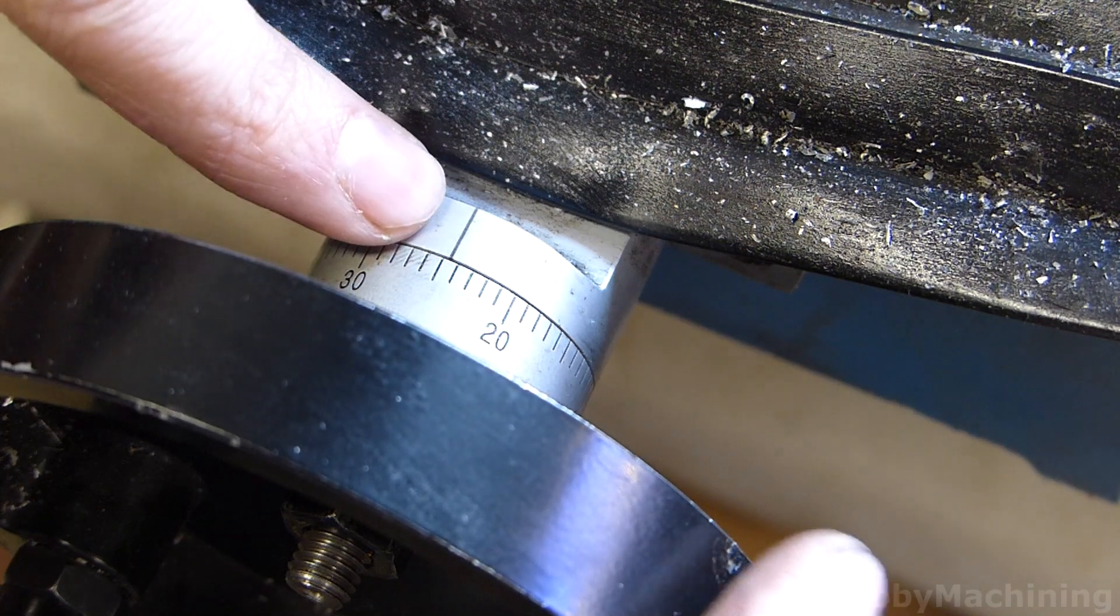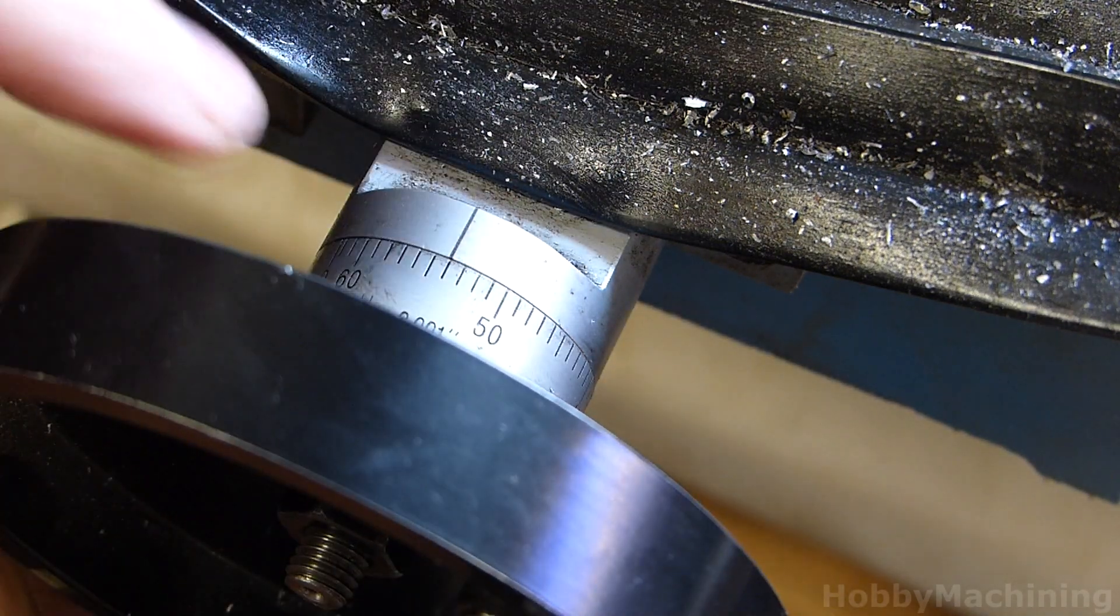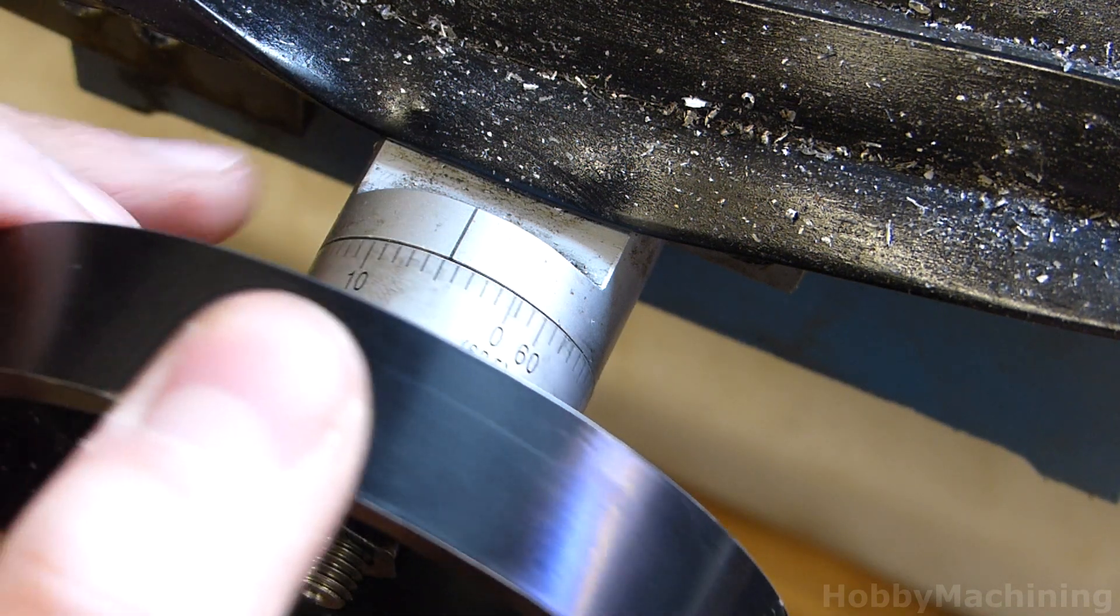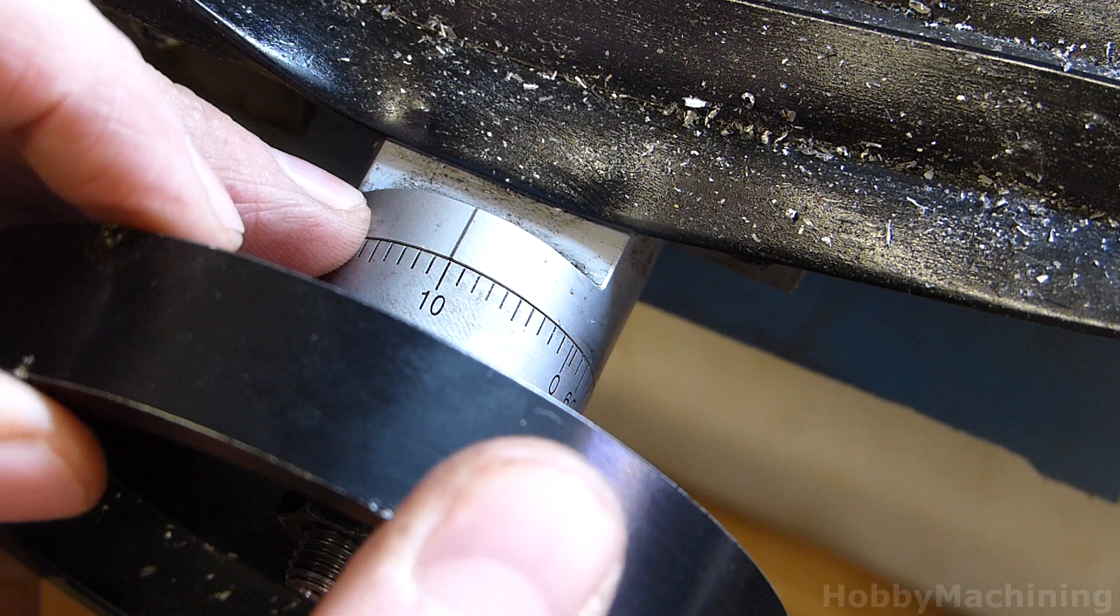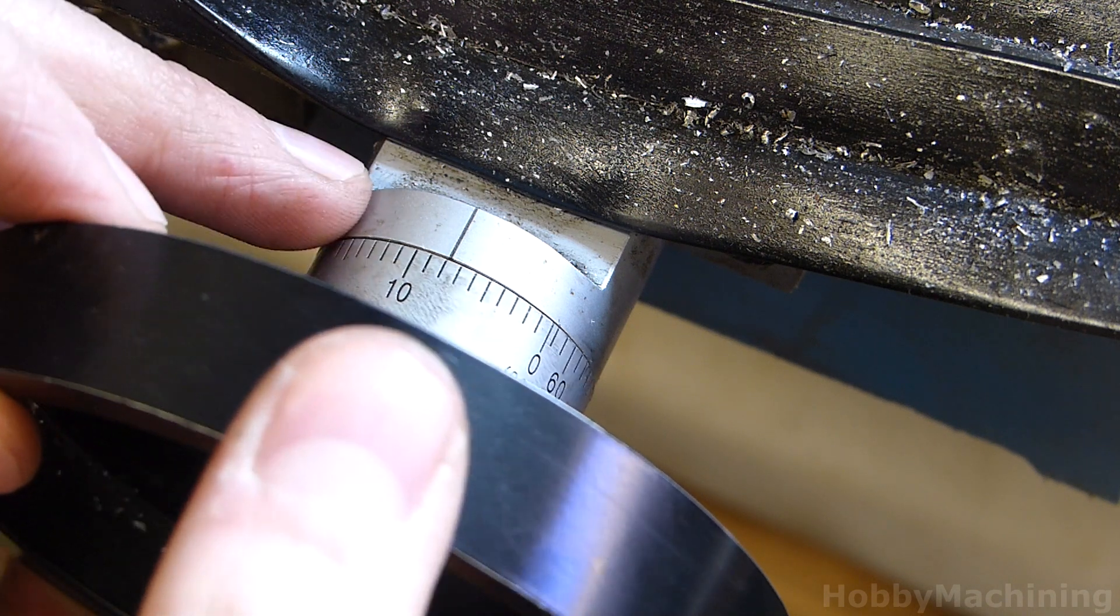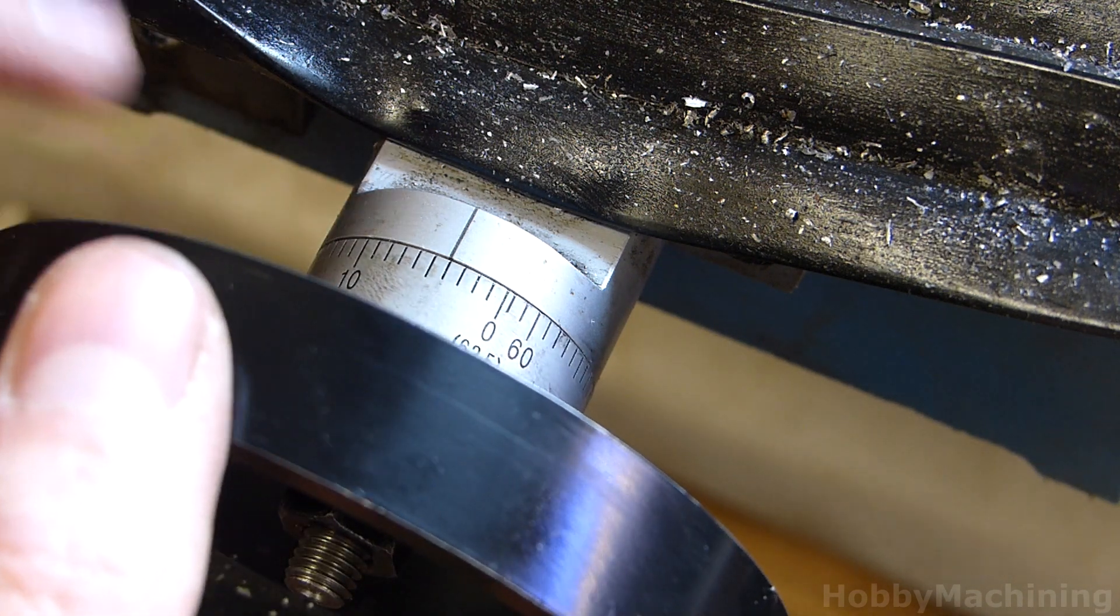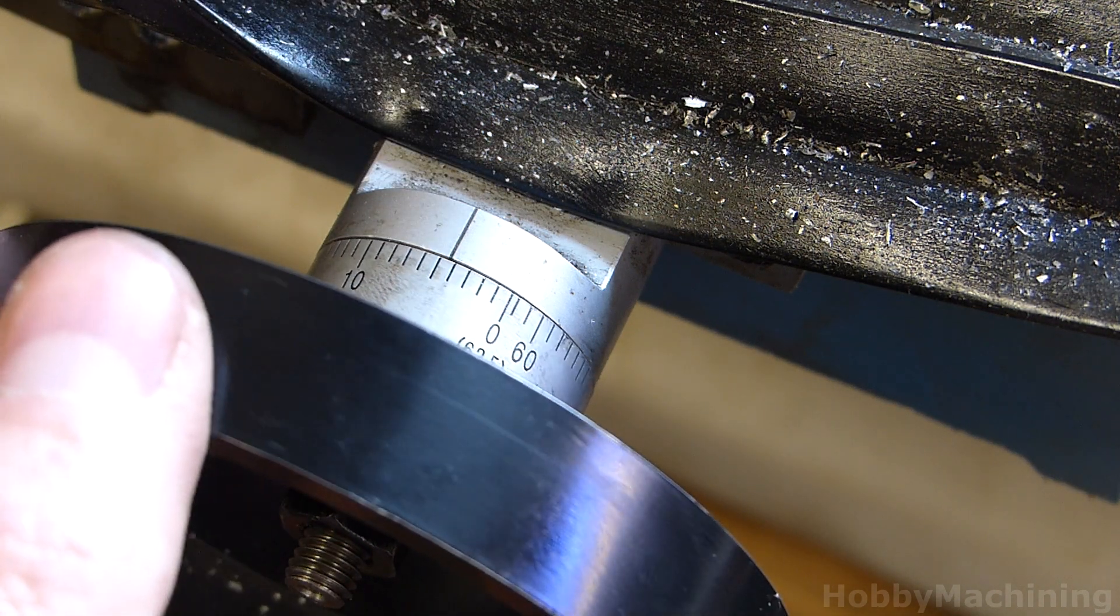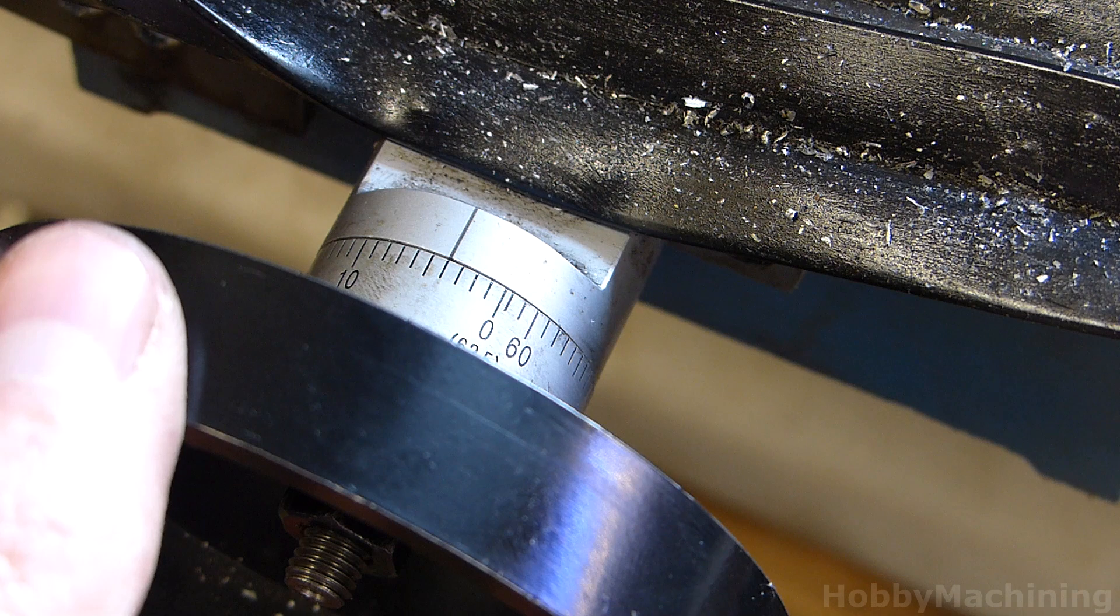If we look at the feed on this mini mill which is graduated in thousandths of an inch and we set it to a given number and we move it backwards until it engages, we can see right there that we have six thousandths of an inch of backlash.